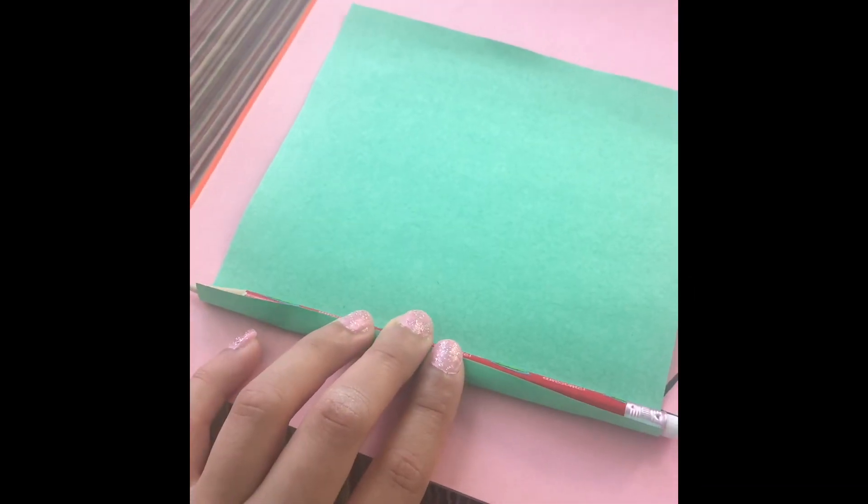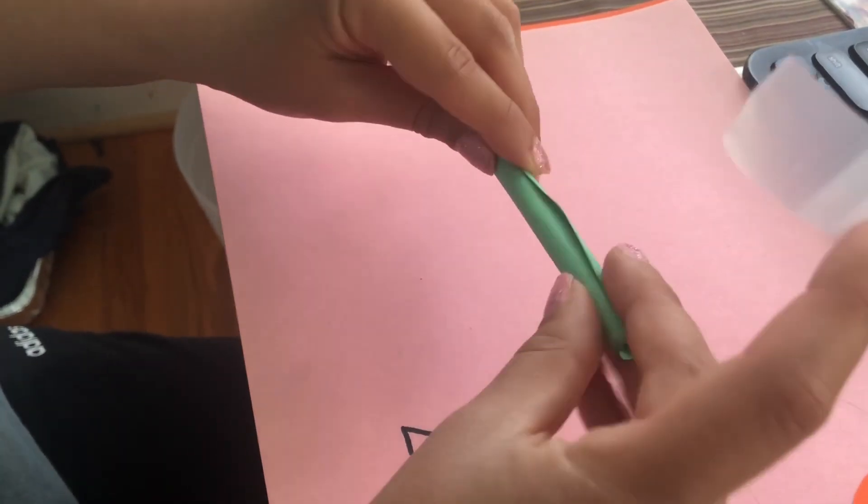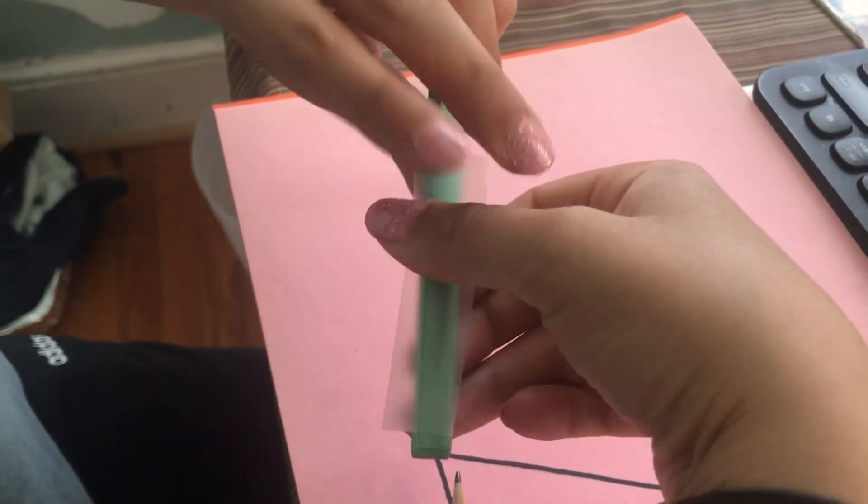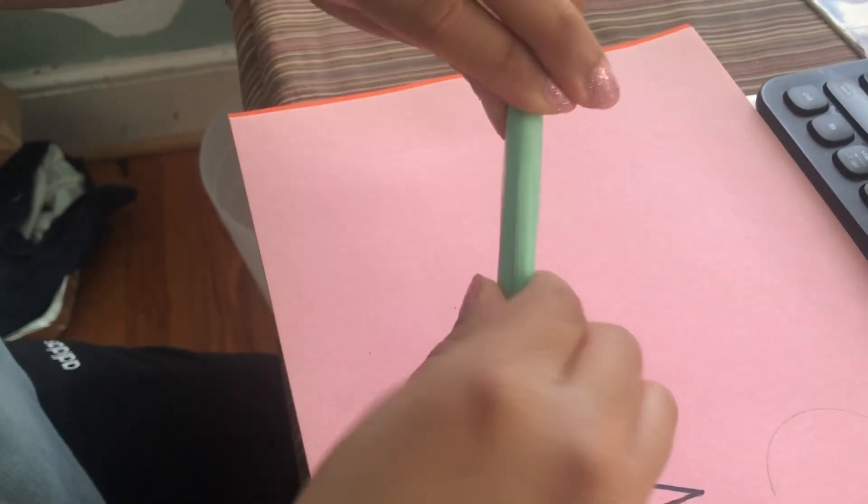So you're going to take a pencil and roll your square all the way down. Then you take the pencil out and you put the tape on and make sure that it's on there tightly and it's not so loose.